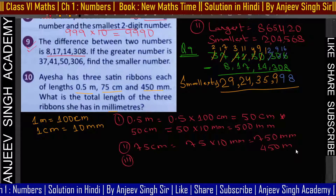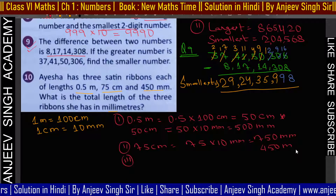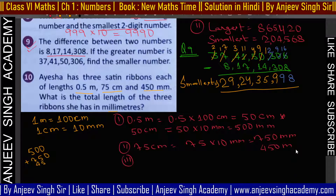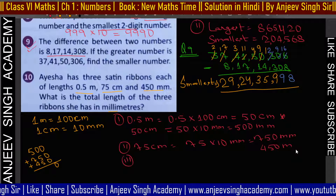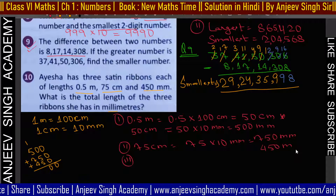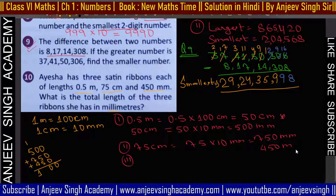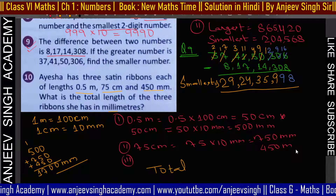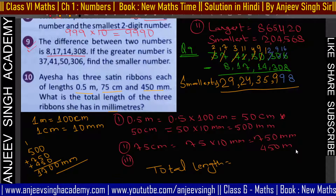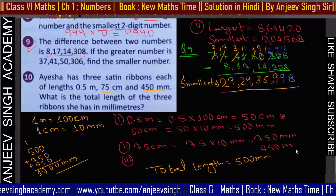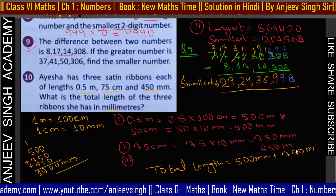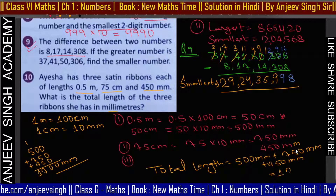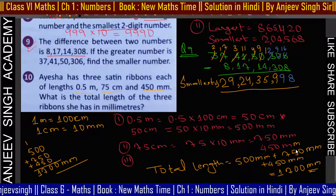अब इन सबको add करेंगे: 500 plus 750 plus 450 = 1700 millimeter। तो total length 1700 millimeter हो जाएगा। यह आपका answer है।